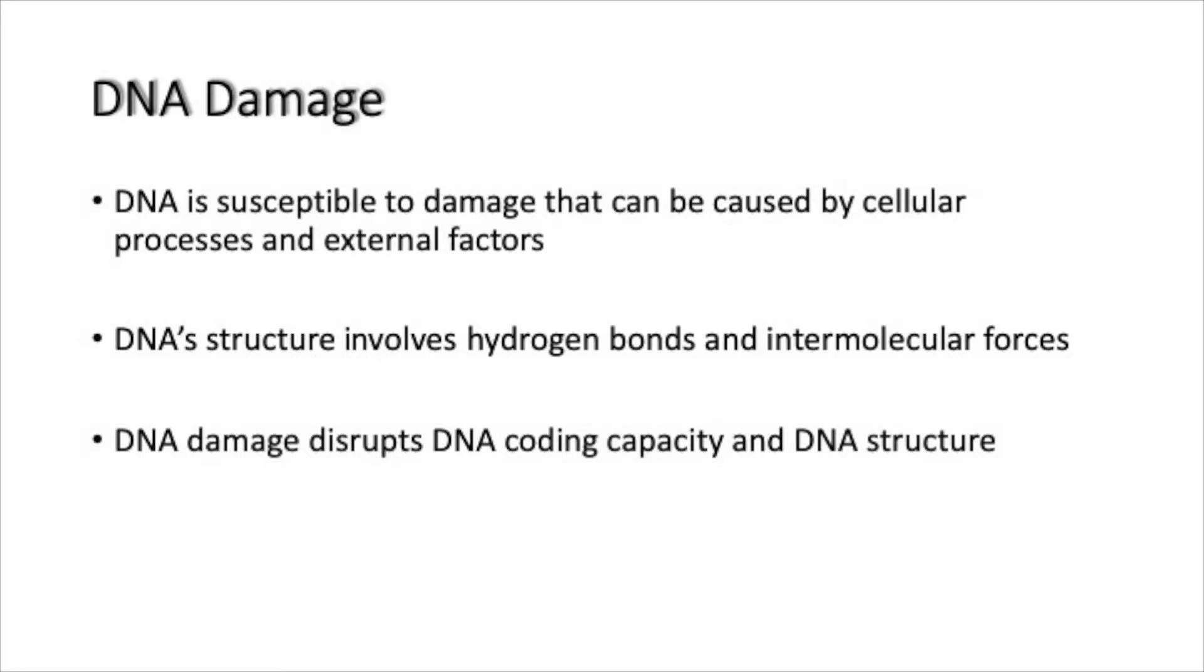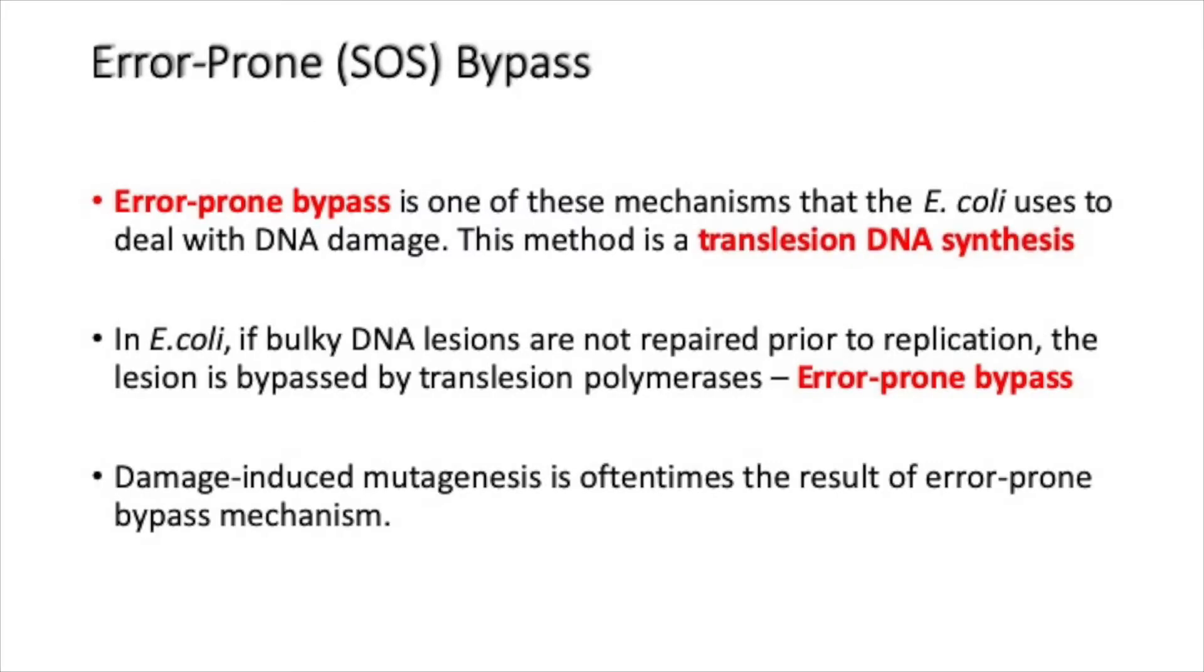A cell has various mechanisms to deal with DNA damage. Error-prone bypass is one of these mechanisms that E. coli uses to deal with DNA damage. This process is also known as translesion DNA synthesis.